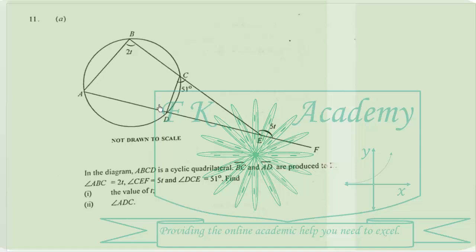We have question number 11 here for the WASI 2024 core math paper 2. In the diagram, ABCD is a cyclic quadrilateral. Line segments BC, AC, and AD are produced to E. Angle ABC is 2T, angle CEF is 5T, and angle DC is 51 degrees. Find the value of T.